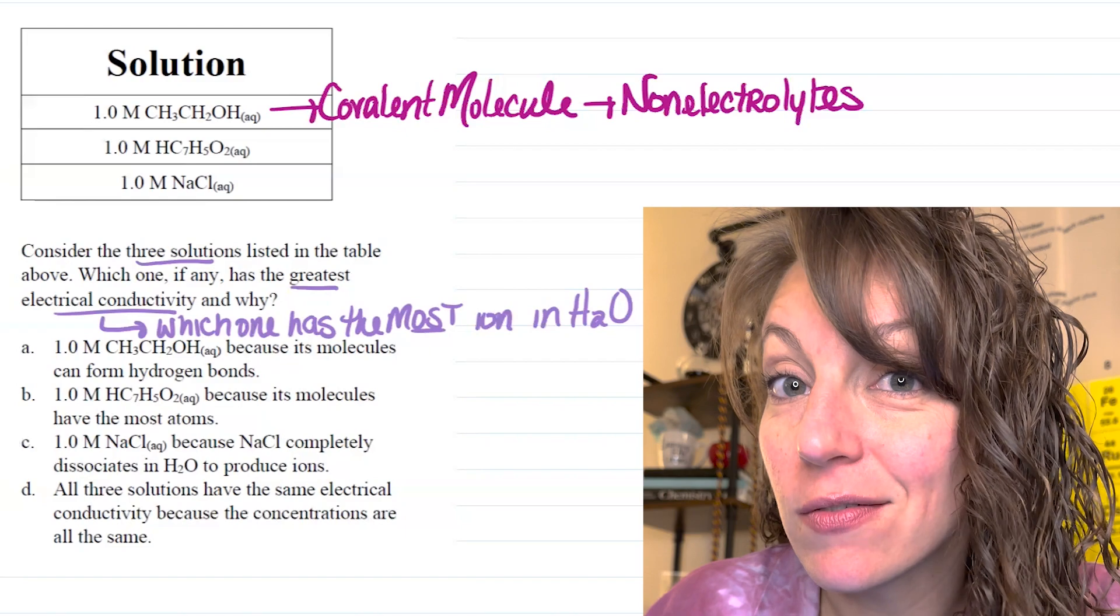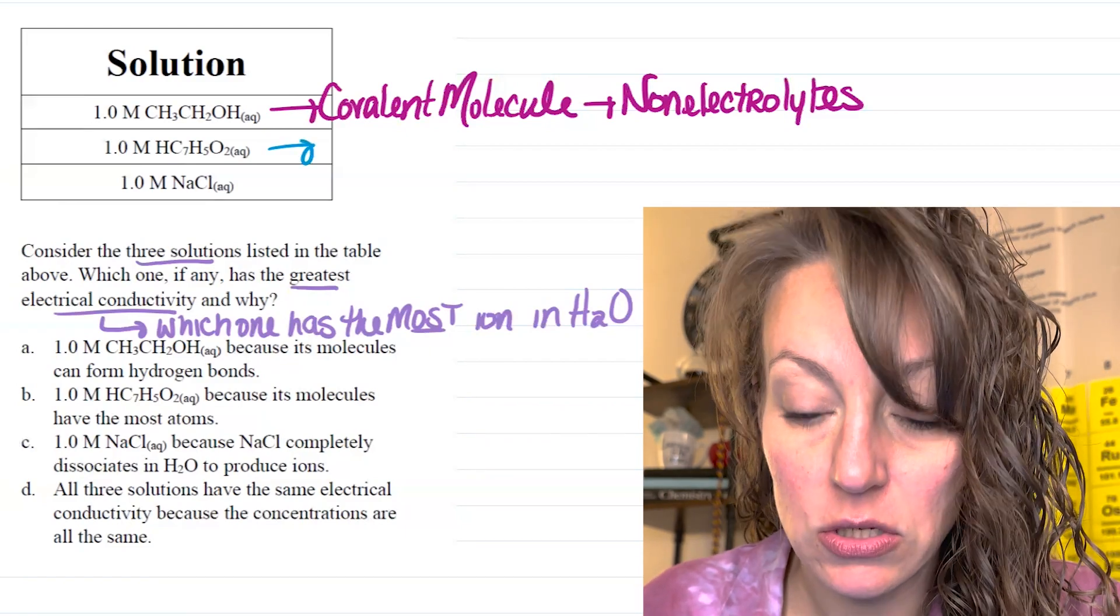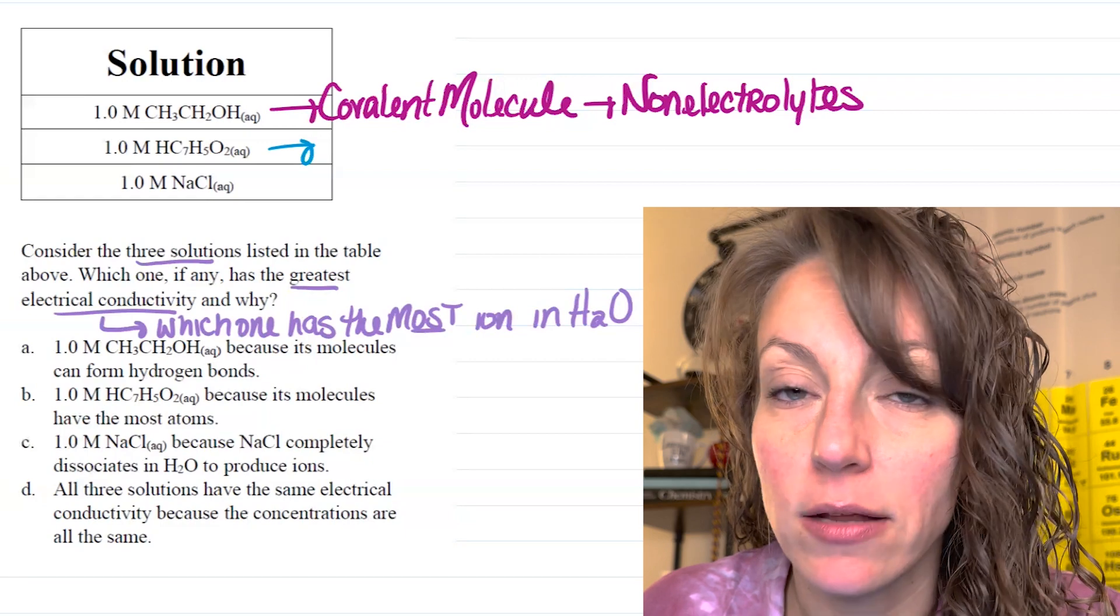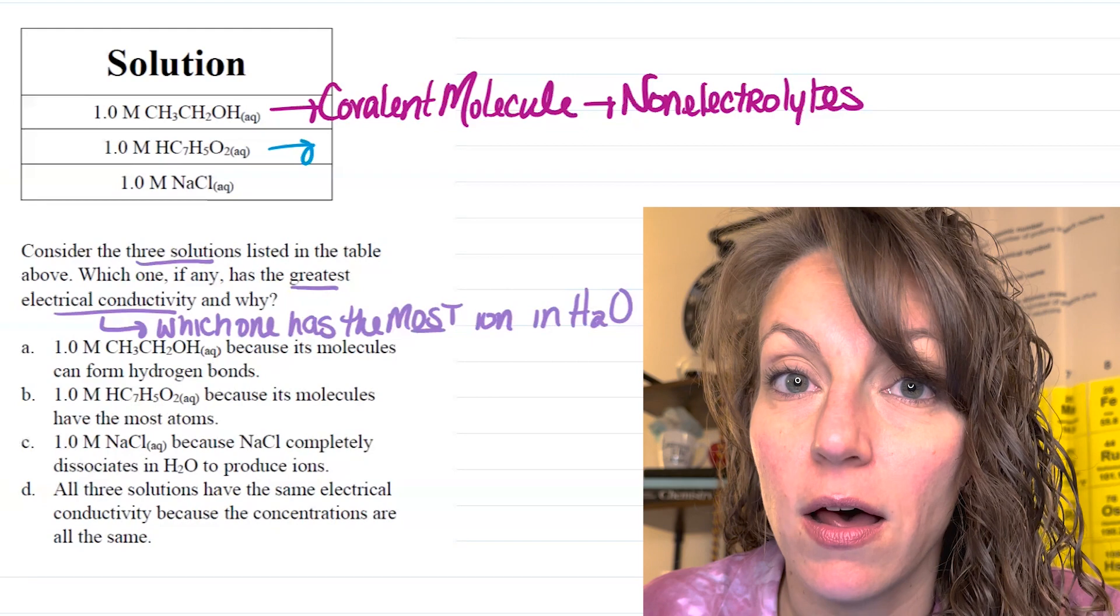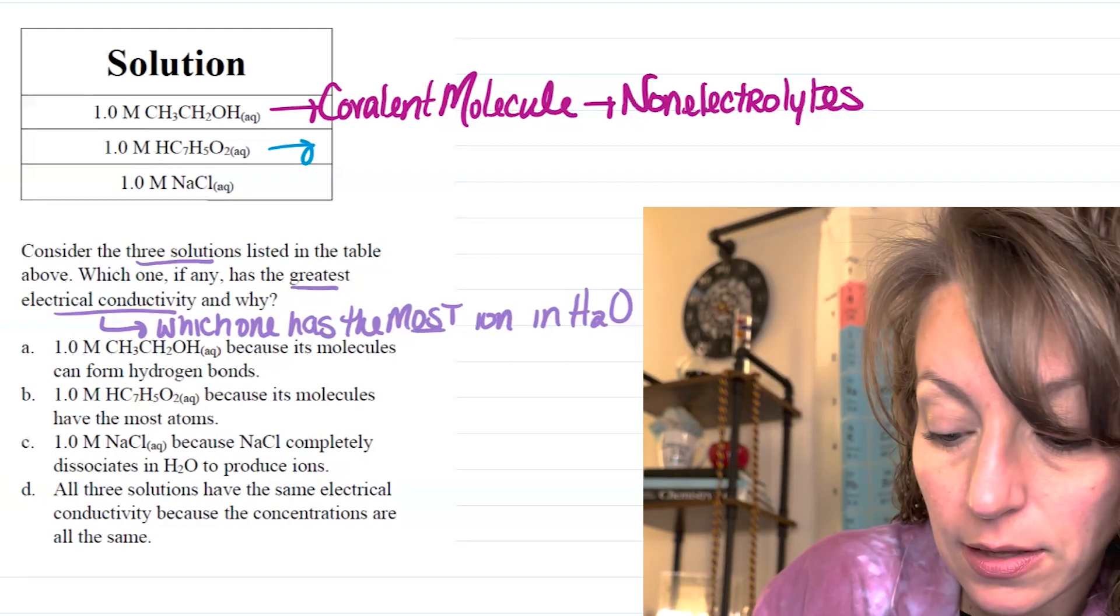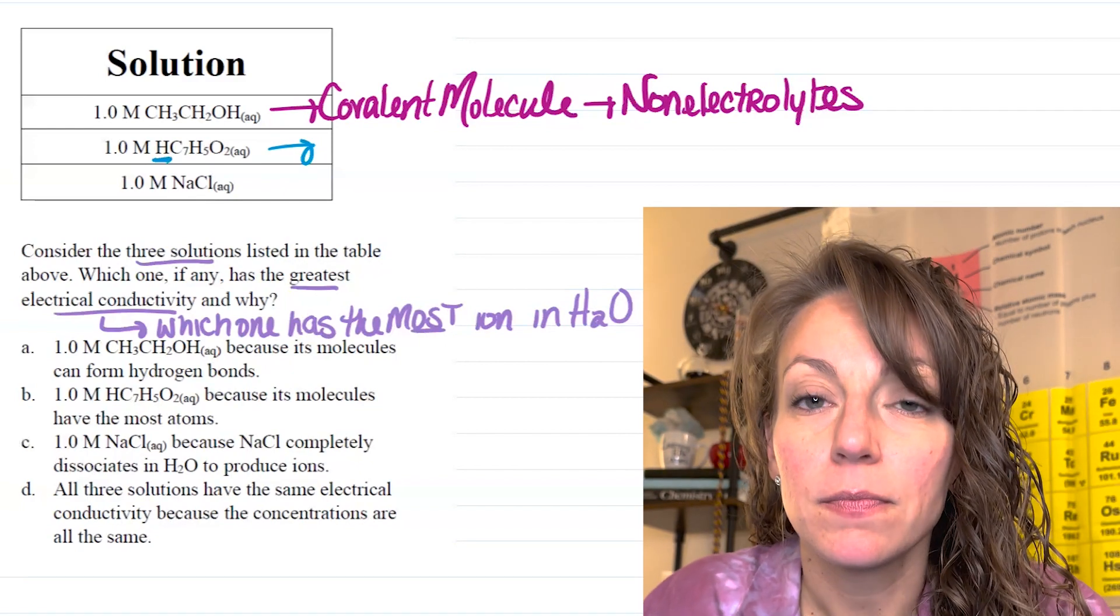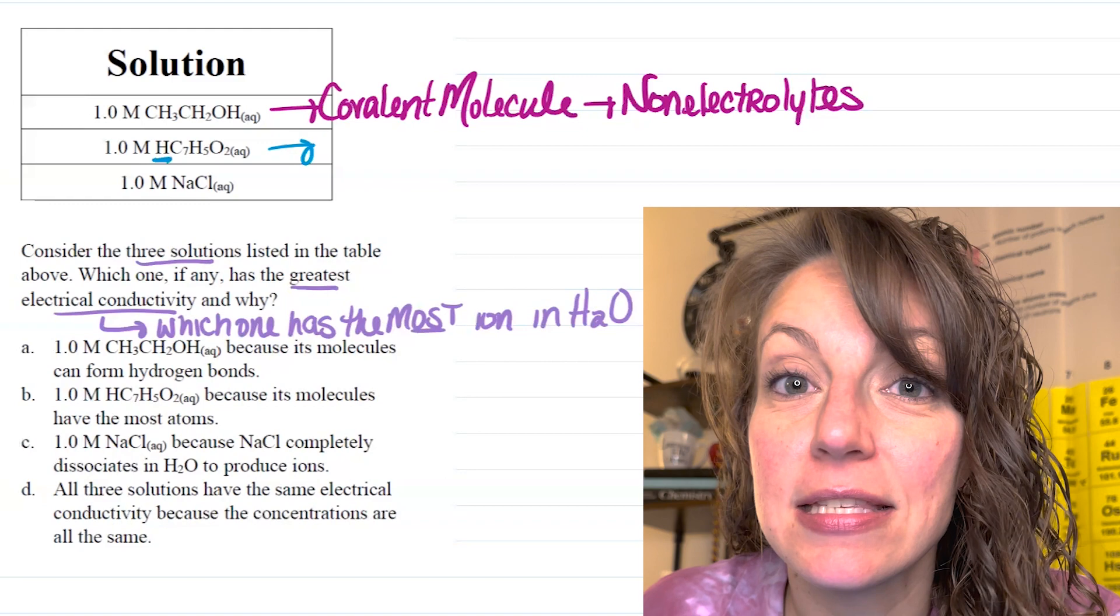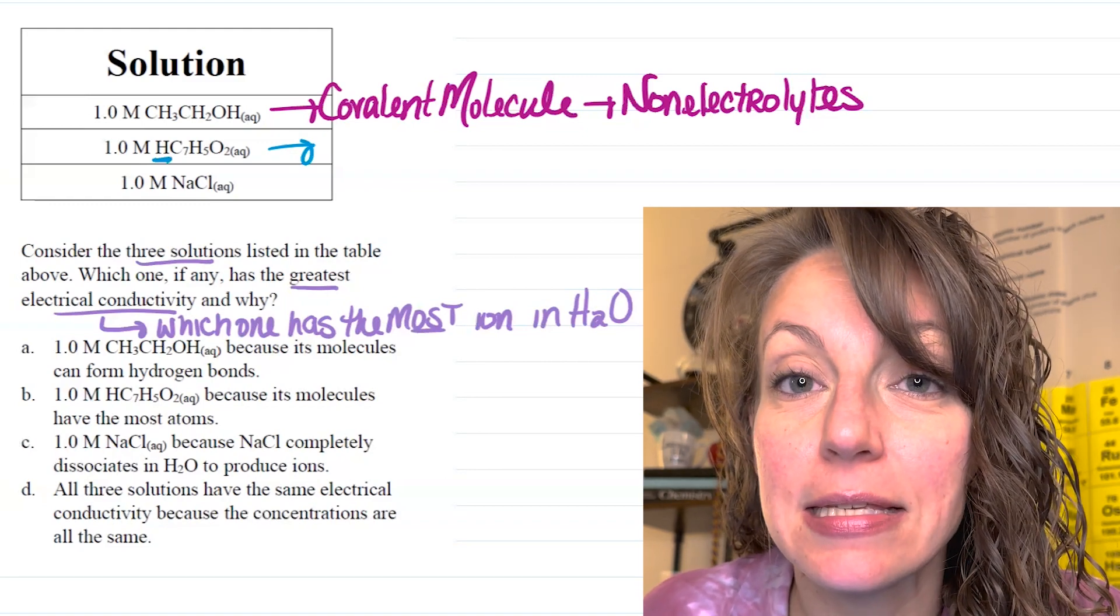Let's see what they give us for the second solution. They give us 1.0 molar HC7H502. Now, again, you've got all non-metal atoms present here. So, there is covalent bonding involved. However, this species is ever so slightly different. This species lists this H out in front of that carbon. When a molecule is written in this fashion, that H is an acidic hydrogen. So, that tells me that this particular species is an acid.